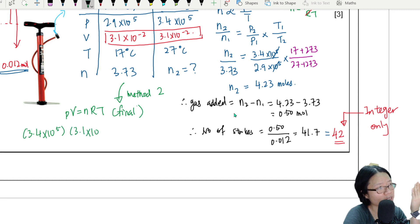3.4 times 10 to the power of 5. Volume here is 3.1 times 10 to the power of negative 2, and 8.31, 27 plus 273. You can do this, and if you press your calculator, you will find that this second value of n is still 4.23.